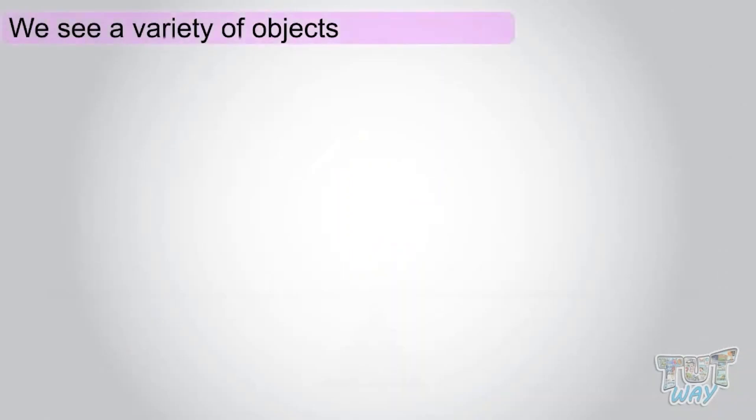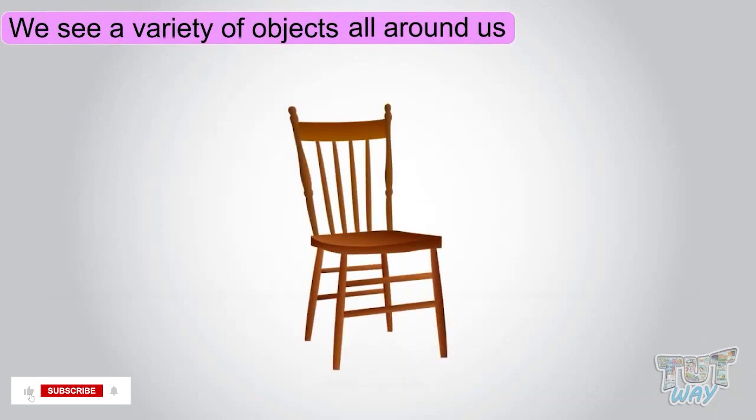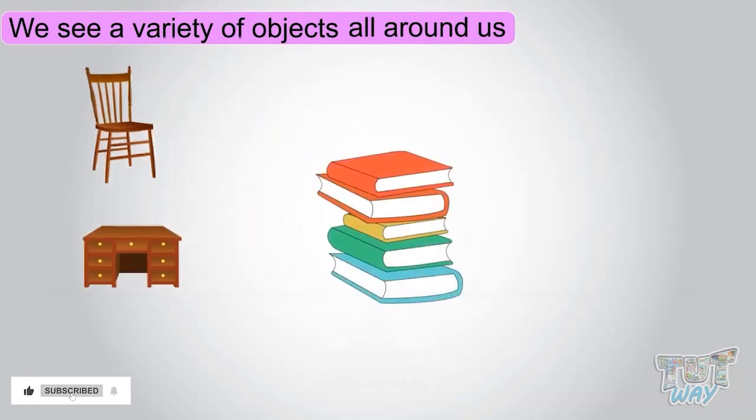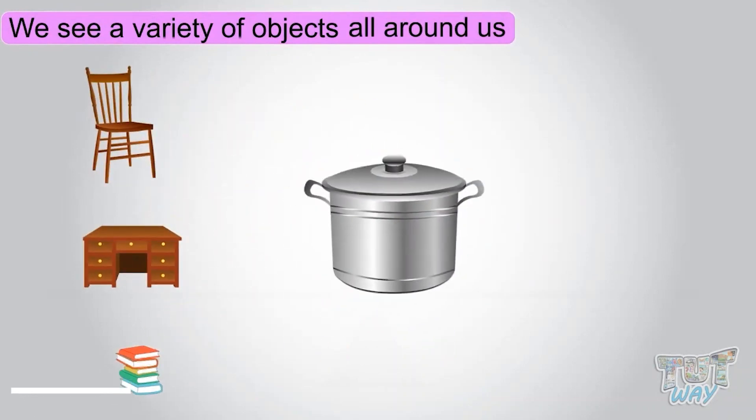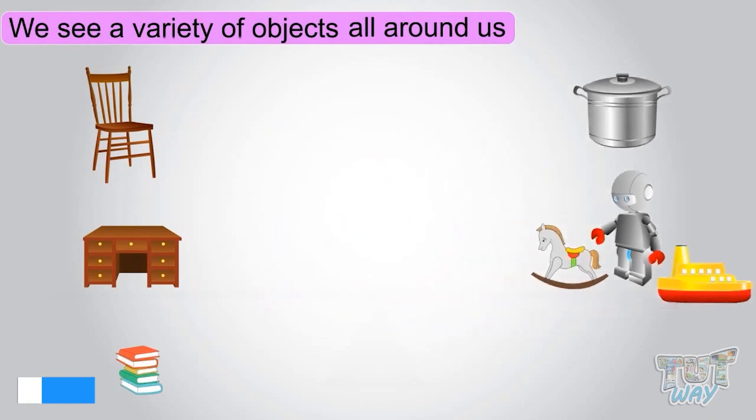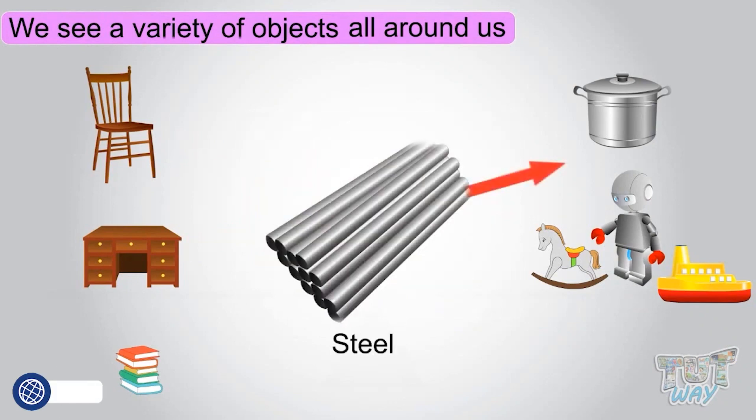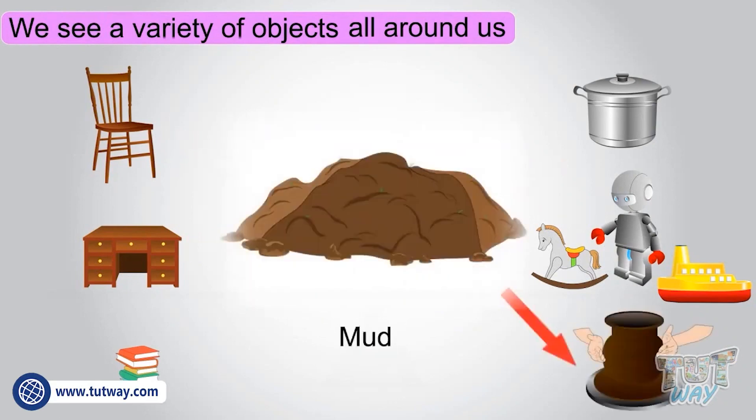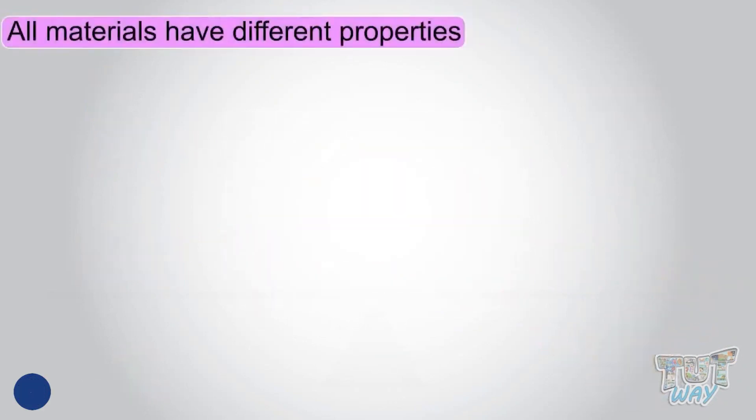We see a variety of objects all around us like a chair, table, book, utensils, and so many toys. They all are made up of different materials like plastic, wood, steel, and mud. All materials have different properties.